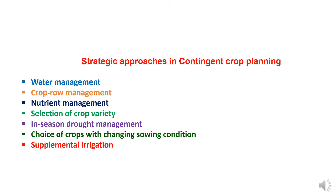Strategic approaches in contingent crop planning include various approaches. The first is water management — efficient rainwater management acts as insurance for the crop during rainfall deficit periods. Management techniques that increase infiltration, swell water storage, and decrease water losses by runoff, evaporation, and evapotranspiration from crop fields are important. In such cases, inter-row cropping, inter-plot water harvesting, or strict water harvesting systems should be encouraged.